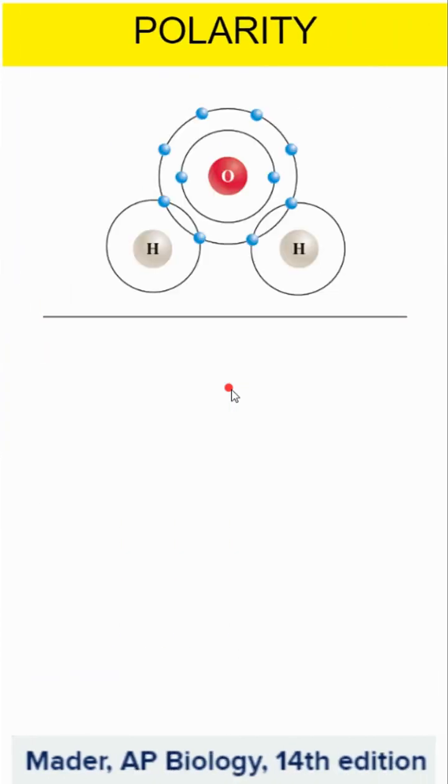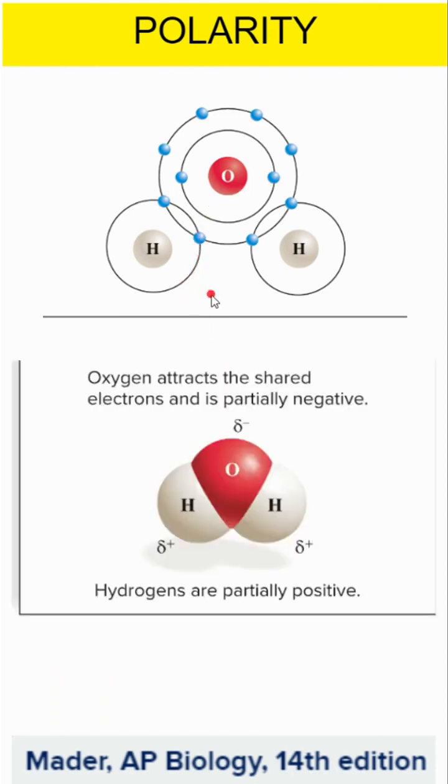Where you get polarity, we have differences in electronegativity, where they have partial positive and partial negative areas, because they don't share their electrons equally.